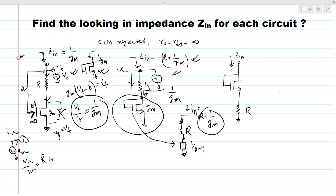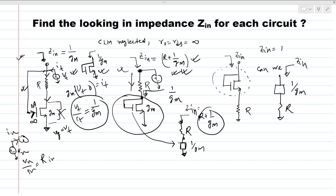In this third circuit, a diode-connected device is also present. So can we write this impedance the same way? Yes we can. The Z-in will be similarly R plus 1/gm, because this device is putting a series resistance of 1/gm, and both impedances are in series. So the effective impedance is 1/gm plus R.